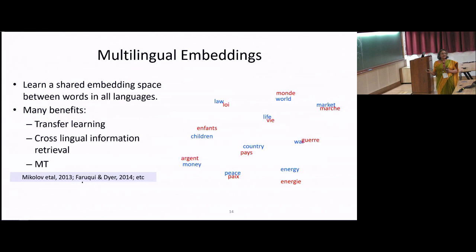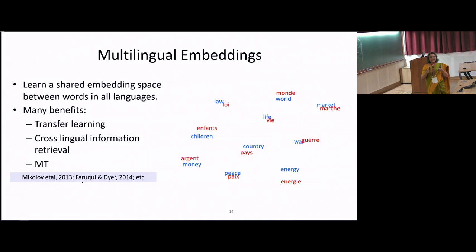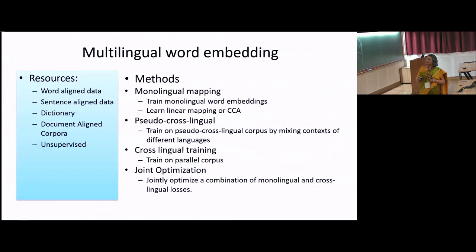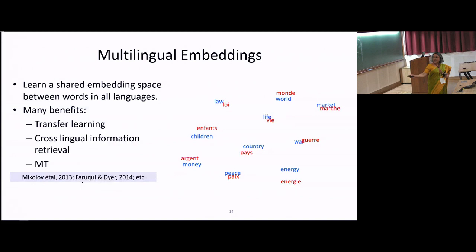To use embeddings to benefit low-resource languages, one approach is to come up with a shared representation where words in two or multiple languages can share the same vector space — two words will be close to each other if their meanings are similar, irrespective of what language they come from. This benefits transfer learning, machine translation, and cross-lingual information retrieval. There has been various work, starting from Mikolov's basic linear transformations from one space to another, to more advanced recent work.